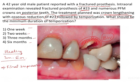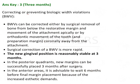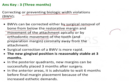The duration of temporization means the phase from the preparation of the tooth — periodontally and prosthetically — until you receive the temporary and are keeping the temporary, so the final impression should be made after how many weeks or months. In one or two weeks you cannot allow the bone to heal completely because it is a slow process requiring remodeling. Correcting or preventing biologic width violations can be done by surgical removal of bone from the restorative margin, movement of attachment apically, or orthodontic movement.